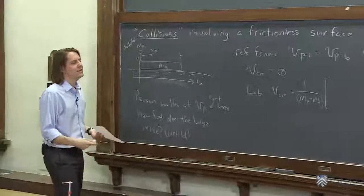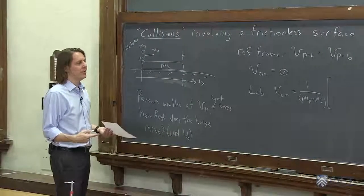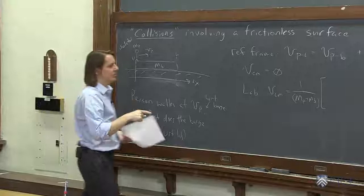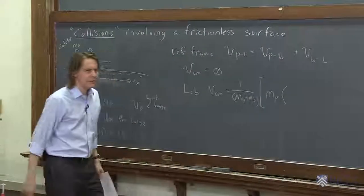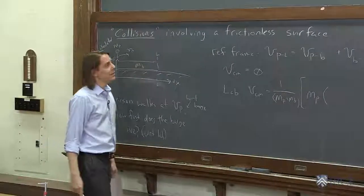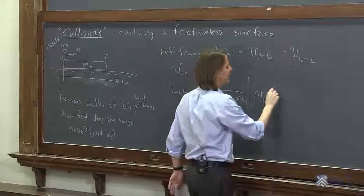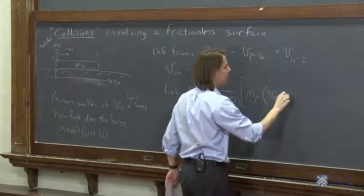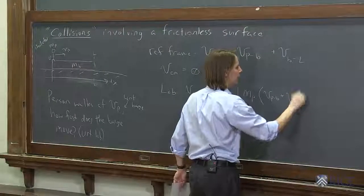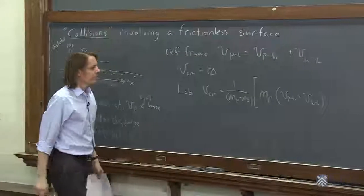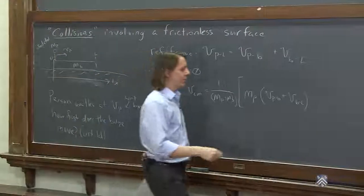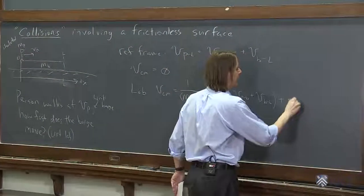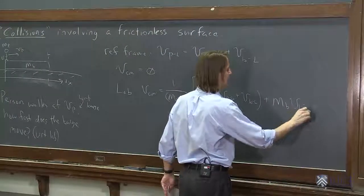And again, we just weight each velocity with the mass. We say it's the mass of the person times the person's velocity in the lab frame, which is VPB, the velocity of the person in the barge frame, plus the velocity of the barge in the lab frame. And then we also need to consider the barge's velocity, plus MB times the velocity of the barge in the lab frame.